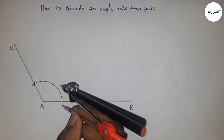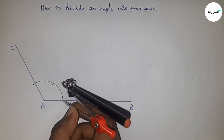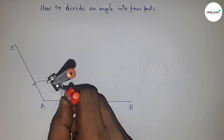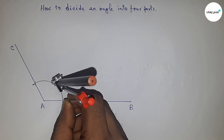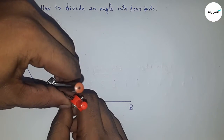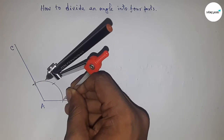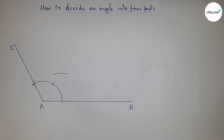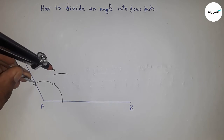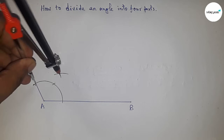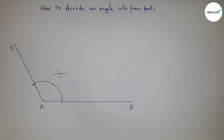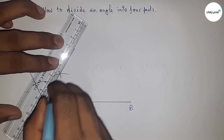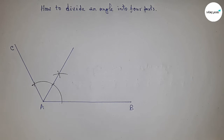Now we have to first bisect the angle. Taking greater than half of the angle and drawing an arc here, then putting the compass at the same length and cutting here. Now we have bisected the angle for the first time.